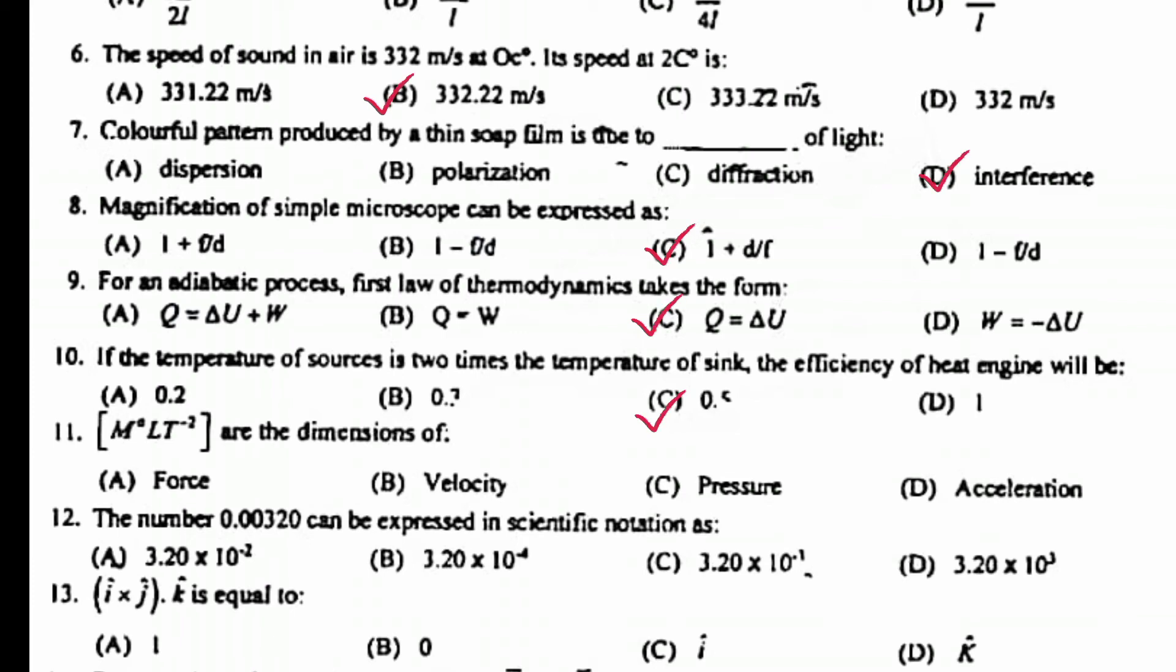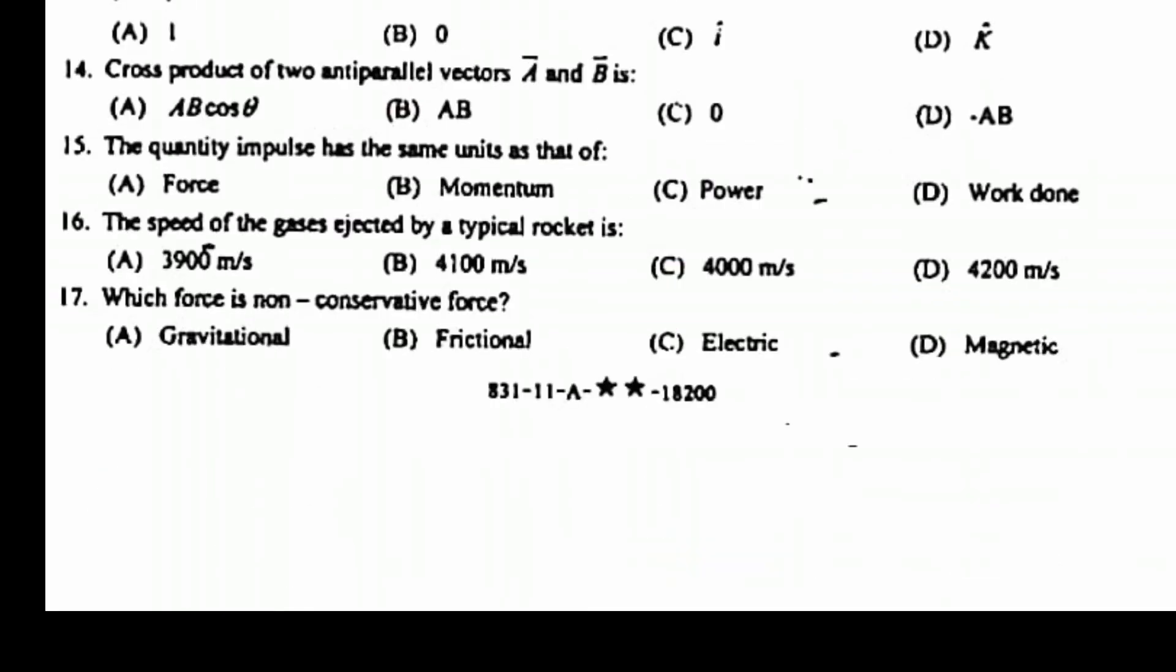M to the power 1, L to the power 1, T to the power minus 2 are dimensions of force. The number 0.00320 can be expressed in scientific notation as 3.20 times 10 to the power minus 3. I cross J dot K is equal to 1. The cross product of two antiparallel vectors A and B is zero. The quantity impulse has the same unit as that of momentum.